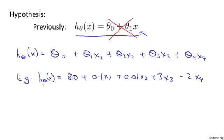Concretely, for a particular setting of our parameters, we may have h of x equals 80 plus 0.1 x1 plus 0.01 x2 plus 3 x3 minus 2 x4. This would be one example of a hypothesis. And remember, our hypothesis is trying to predict the price of the house in thousands of dollars. This is saying that the base price of the house is maybe $80,000 plus another $100 per square foot, plus the price goes up a little bit for each additional floor that the house has, and it goes up further for each additional bedroom the house has, and the price goes down a little bit with each additional year of the age of the house.